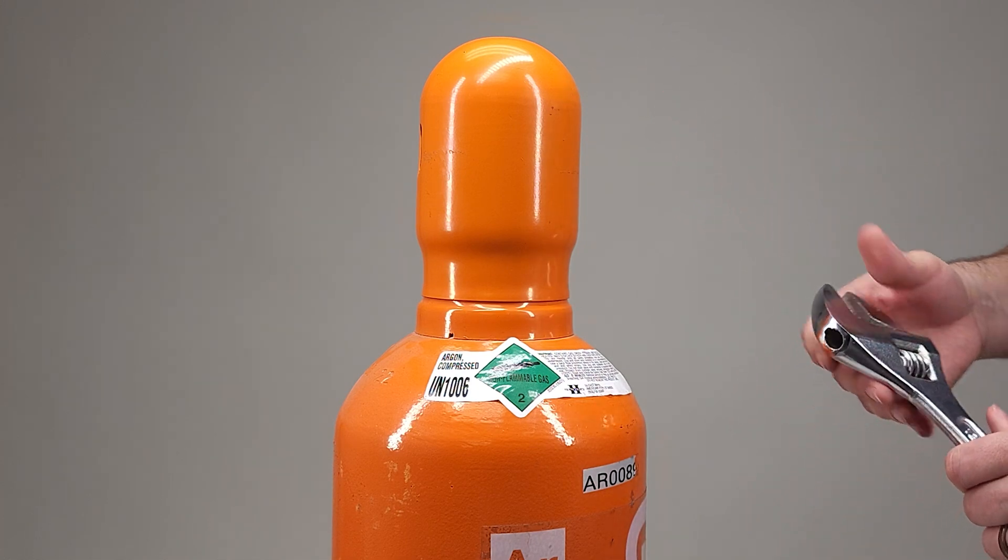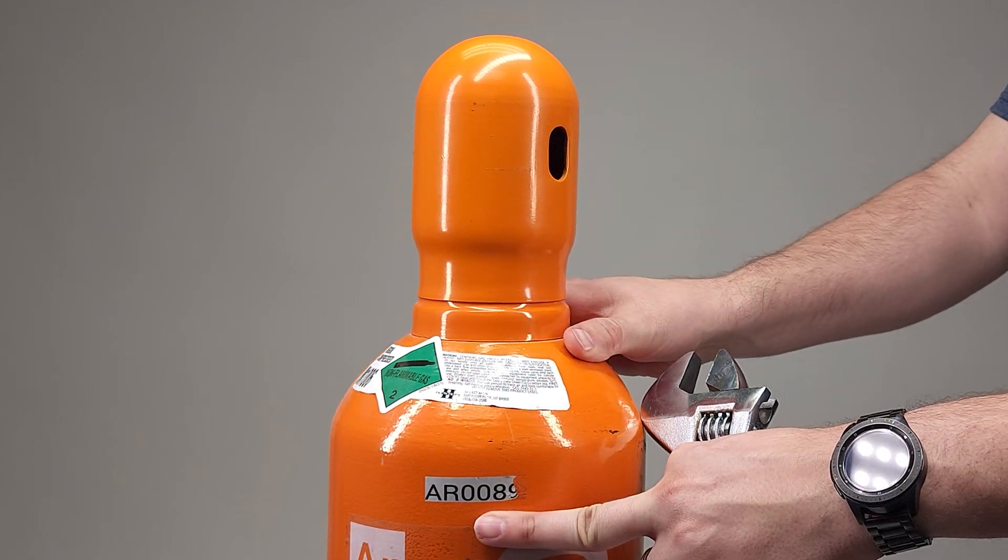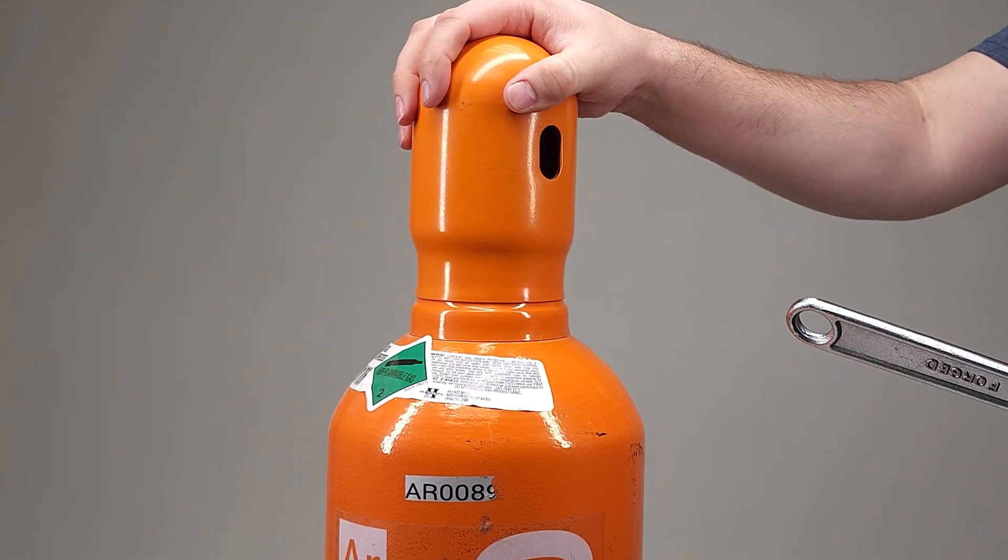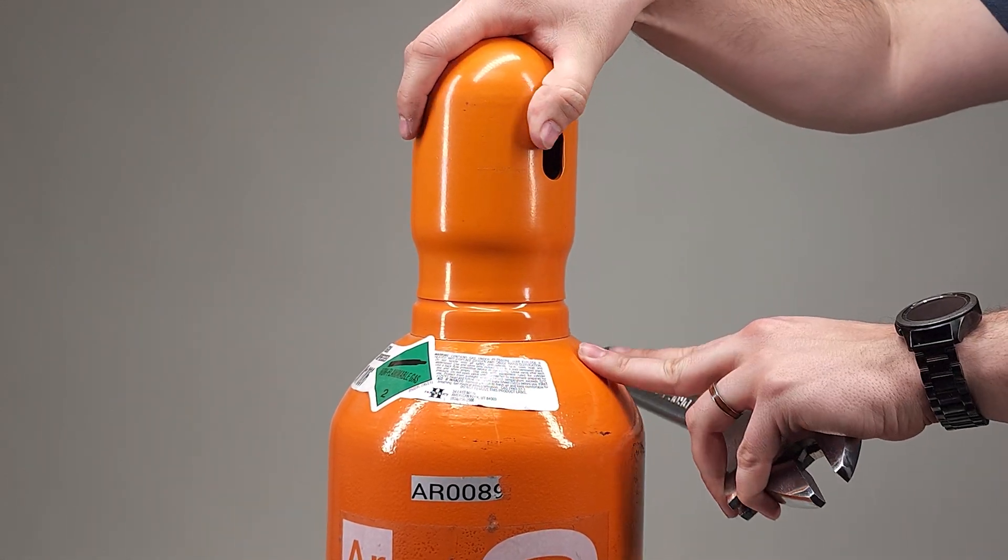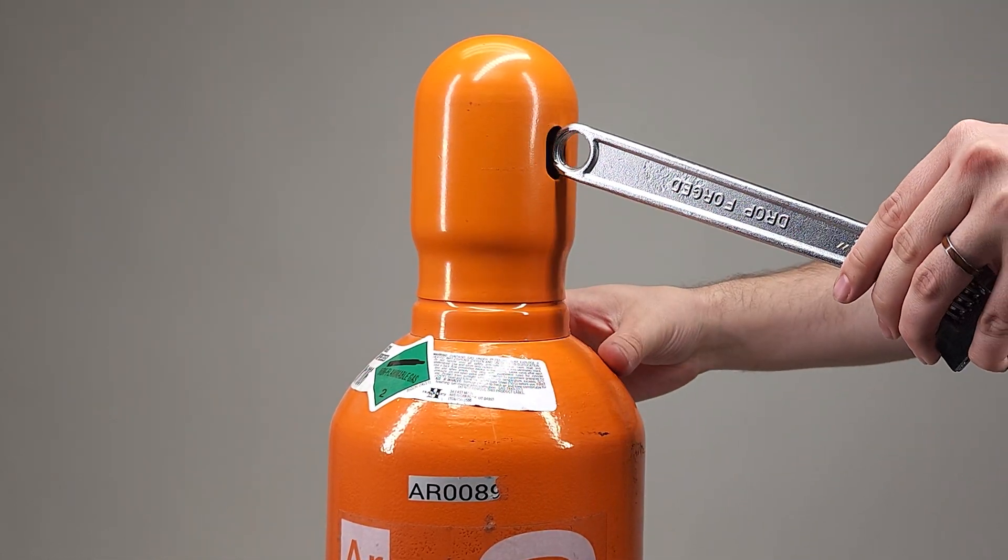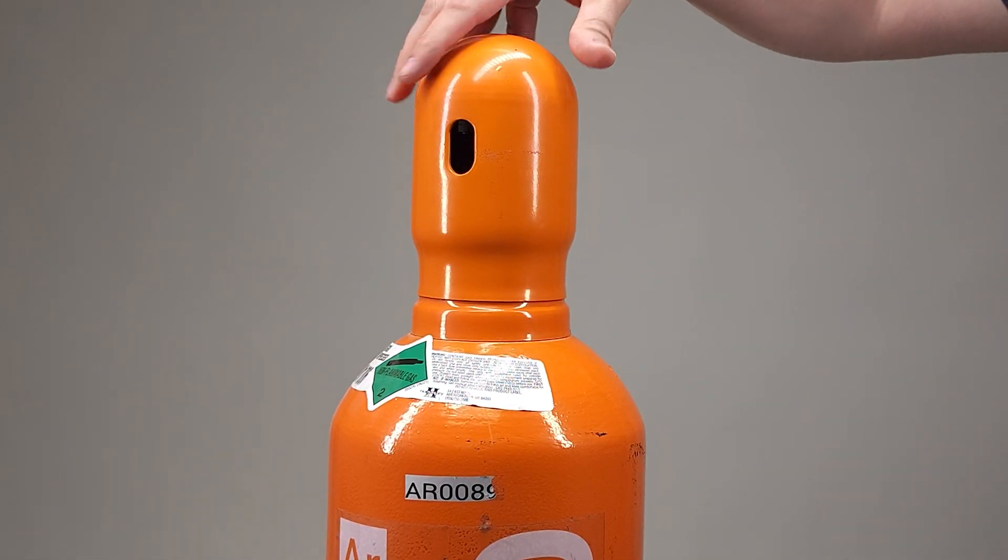As I spin this tank around we'll see that the cap covering the valve stem has a little hole. I can use the end of my wrench if this is a little tight and you can't screw it off by hand to loosen it up to get that necessary leverage. Then we can just twist this off.